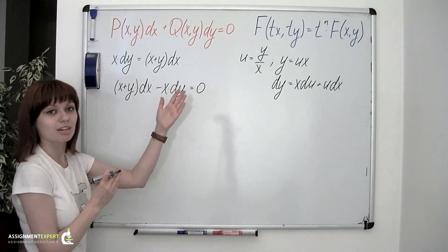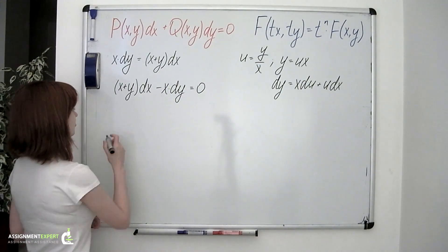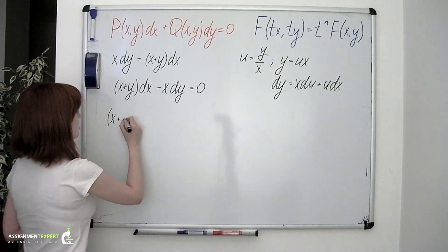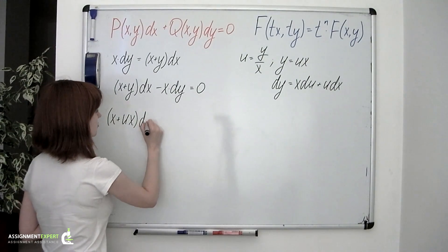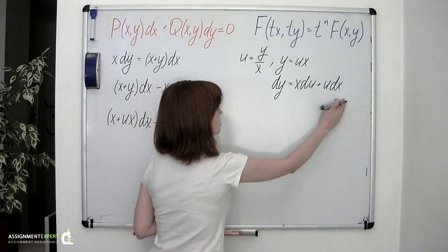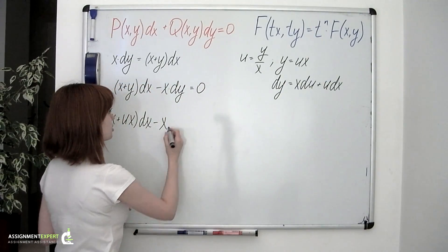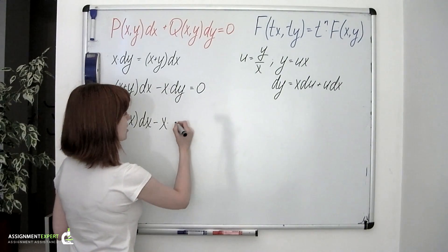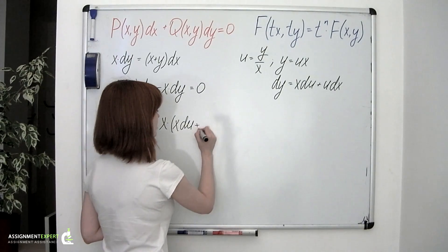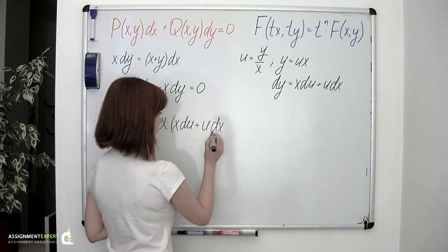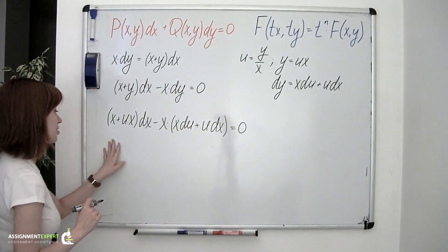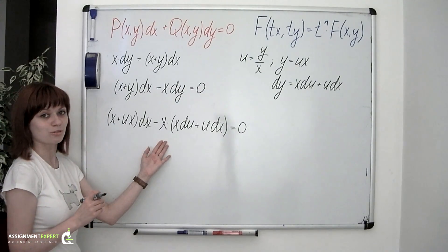Now let's put this new variable in our equation. So instead of y, we'll have u times x dx minus x times dy, and dy equals x times du plus u times dx. This equals 0. So our following step is to solve this equation for u.